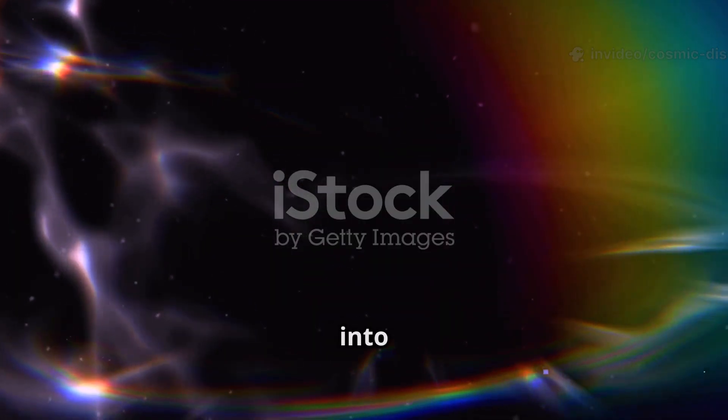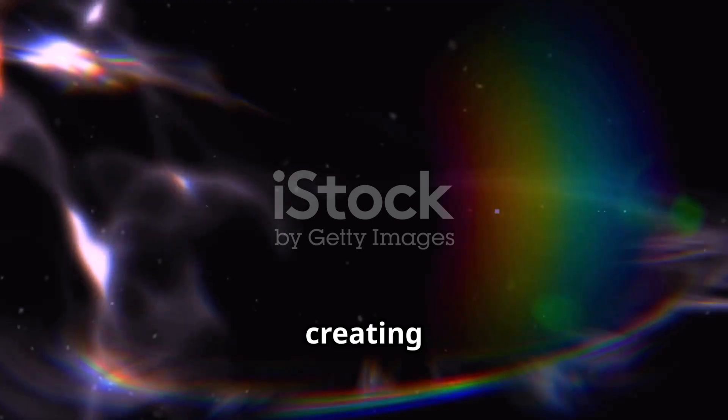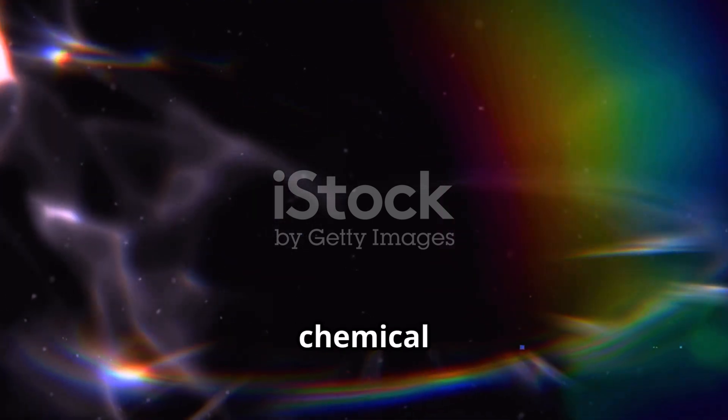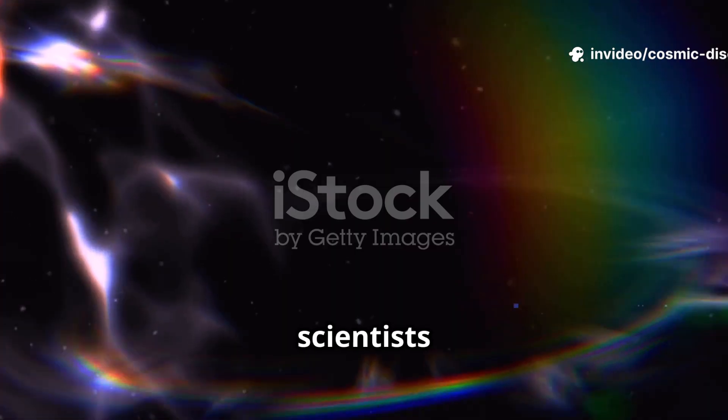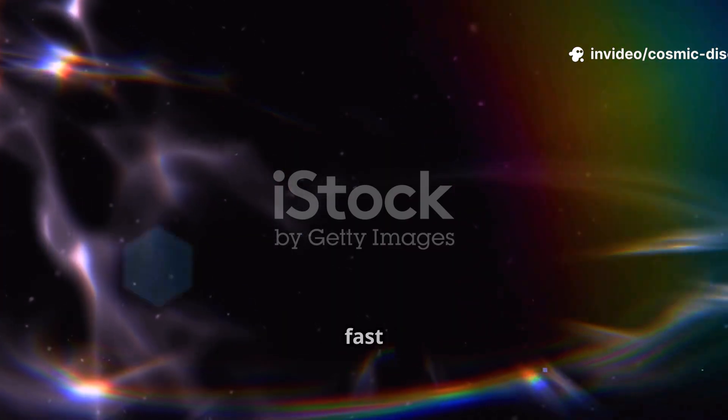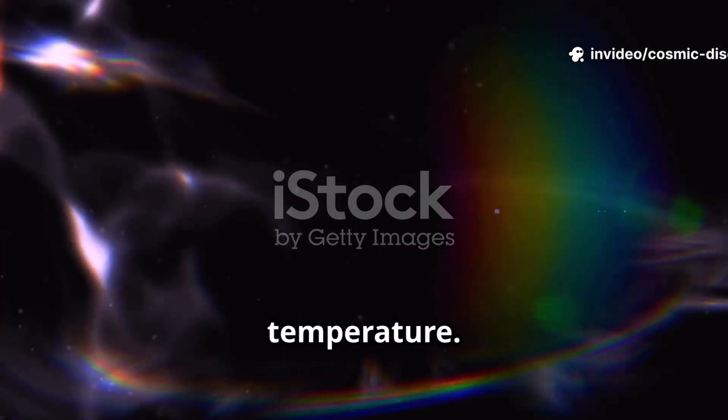It works by breaking down the light from each object into its constituent colors, creating a spectrum. This spectrum acts like a chemical fingerprint, telling scientists what an object is made of, how fast it is moving, and its temperature.